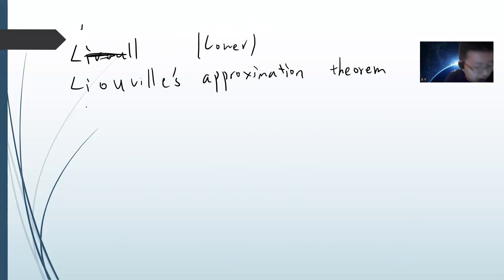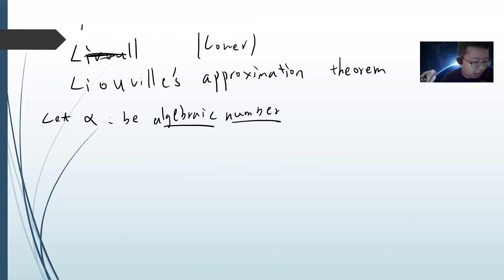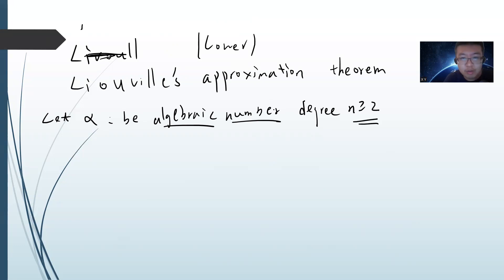Let me state the theorem. Let alpha be an algebraic number — meaning alpha satisfies some irreducible polynomial over Q, so there is a rational polynomial such that alpha is a root, and that polynomial is not zero. The degree n is greater than or equal to 2.